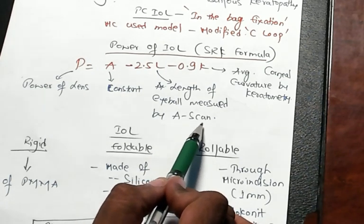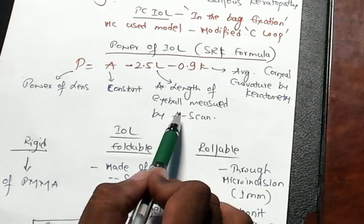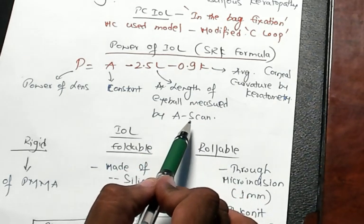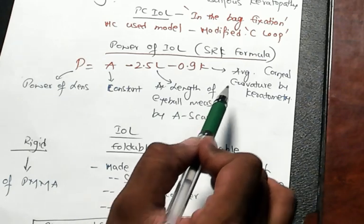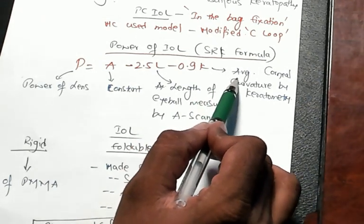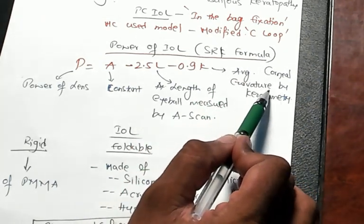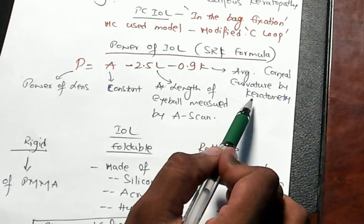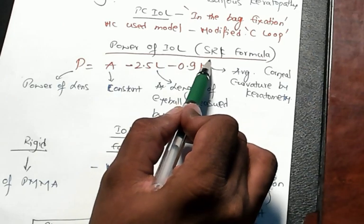L is the length of the eyeball measured by the A-scan mode of the ultrasound. In order to measure the length of the eyeball we use the A-scan mode of the ultrasound. And K is the average corneal curvature calculated by keratometry. So that is SRK formula for the power of the IOL.